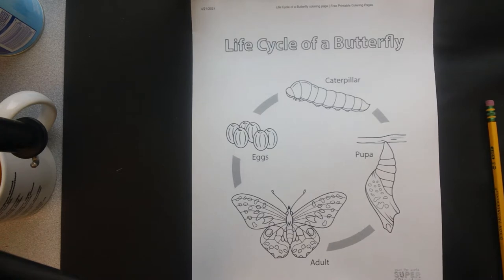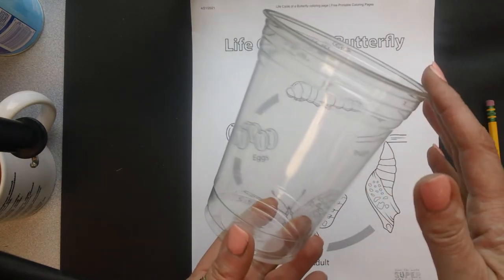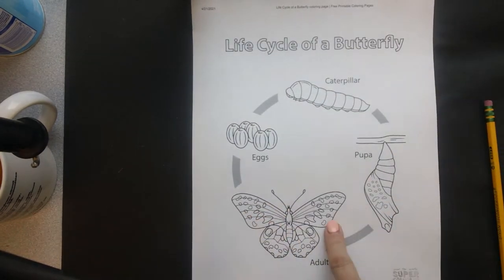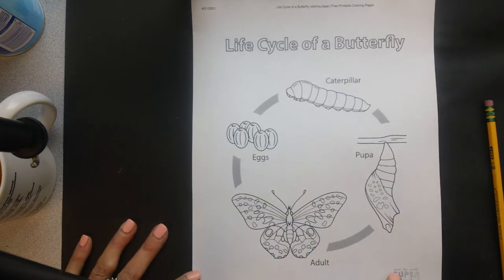Grasshoppers, beetles, butterflies? Well, you're all going to get a cup like this, and this is going to be our bug jar. And you're going to get a sheet that outlines the life cycle of the butterfly,